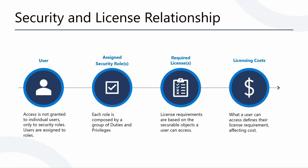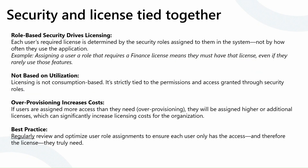Licensing in Finance and Operations isn't about how much someone uses the system — it really is about the different actions they're performing. So if someone only uses the system once a month, they will still require the same level of licensing as someone using the system for the whole month. There isn't a utilization concept when it comes to D365 licensing. The way to stay on top of this is to regularly review and optimize your user assignments, active users within the system, and the individual roles that are configured. This should be a regular exercise.